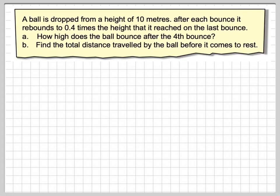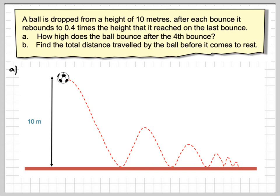So let's have a look at this diagram here. So here we have the diagram. So this first bounce is here. The first term of this geometric sequence will be 4 metres, which is 0.4 of 10. The next one will be 4 times 0.4, so this will be 1.6 metres, this height here.